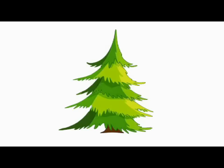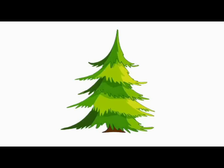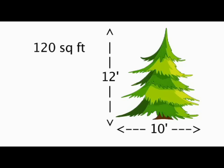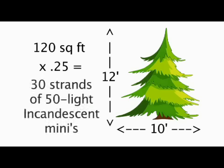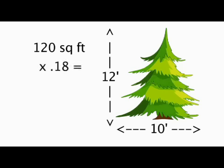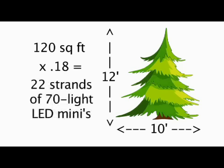So let's take a look at an example. This tree is 10 feet wide by 12 feet tall, which gives you a square footage of 120 square feet. Multiply that by .25 and that gives you 30 strands of 50 light incandescent minis, or multiply the 120 by .18 and this tree would take 22 strands of 70 count LED minis.